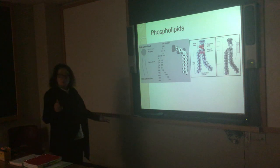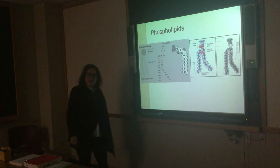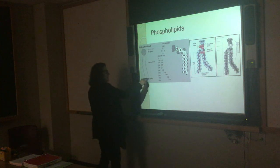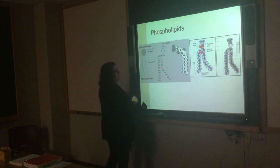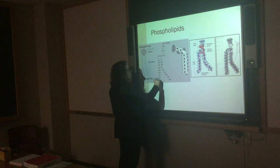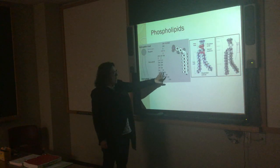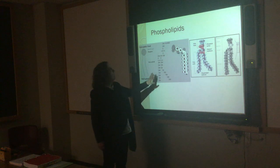Phospholipids are often drawn showing a hydrophobic tail and a hydrophilic head. Hydrophilic means attracted to water; hydrophobic means afraid of it. That's why the heads always stick out and the tails stick in on a membrane. We still have a glycerol backbone in phospholipids, but at the third carbon we have a phosphate group and head attached. The other two carbons have fatty acids bound to them. Phospholipids tend to have a higher proportion of polyunsaturated fatty acids.